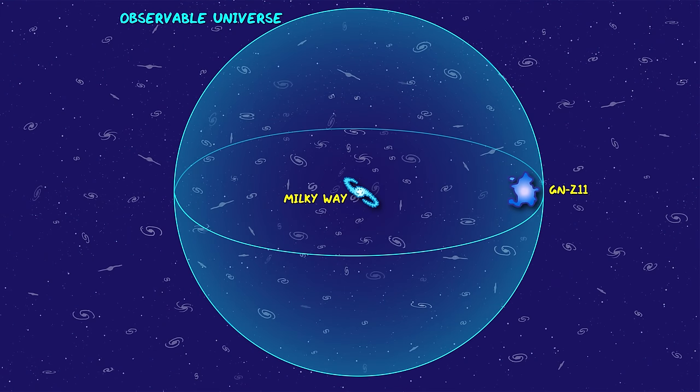I say right now, but GNZ 11 doesn't exist anymore. Its stuff will have turned into some other stars or galaxies a long time ago. But whatever it is now, because it's so far away, it's moving away from us faster than the speed of light. So no light it emits right now will ever reach us.